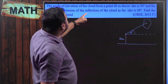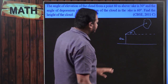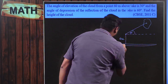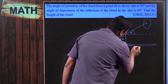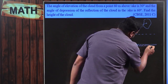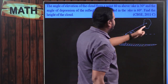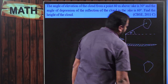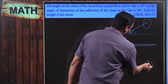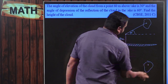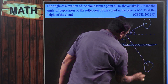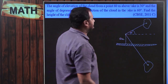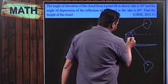The angle of depression of the reflection of the cloud in the lake — this is the surface of the lake, and the reflection will be inside the lake. This is the reflection. The angle of depression of the reflection of the cloud in the lake is 60 degrees.